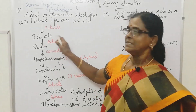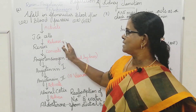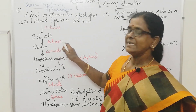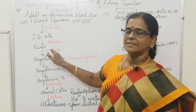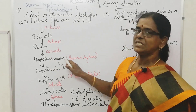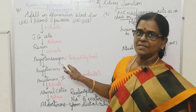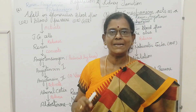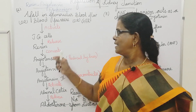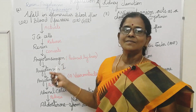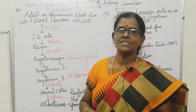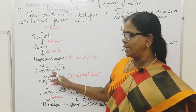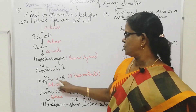When the juxtaglomerular cells are activated, they release renin. Renin converts angiotensinogen — angiotensinogen is produced by the liver. This renin converts angiotensinogen into angiotensin 1, then angiotensin 2.